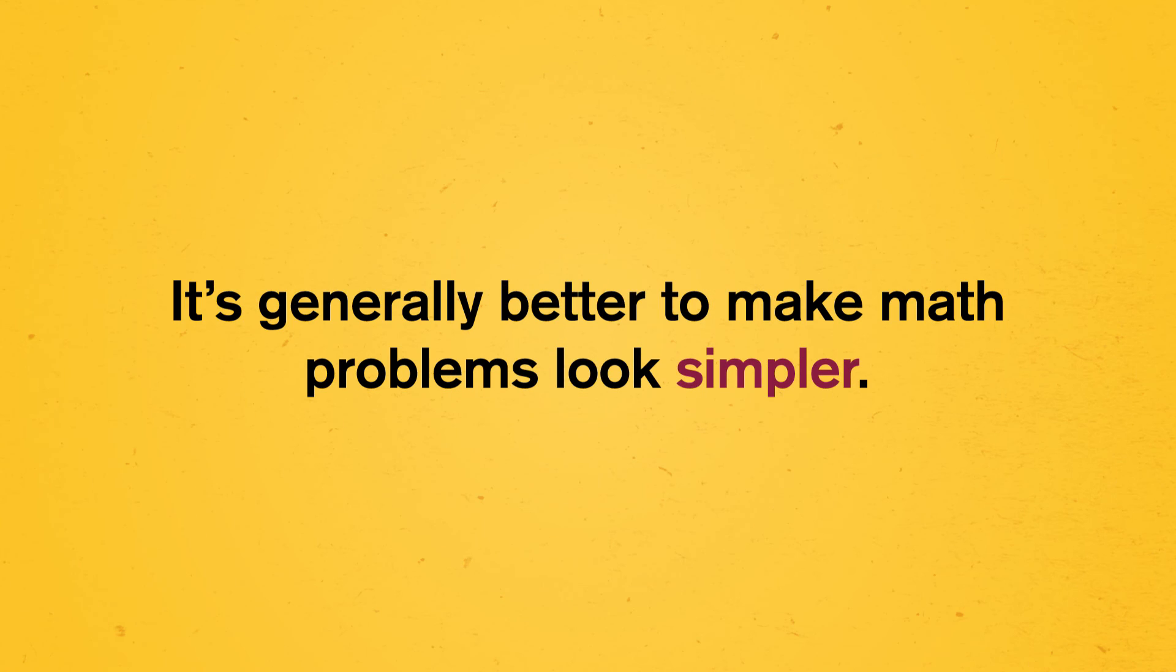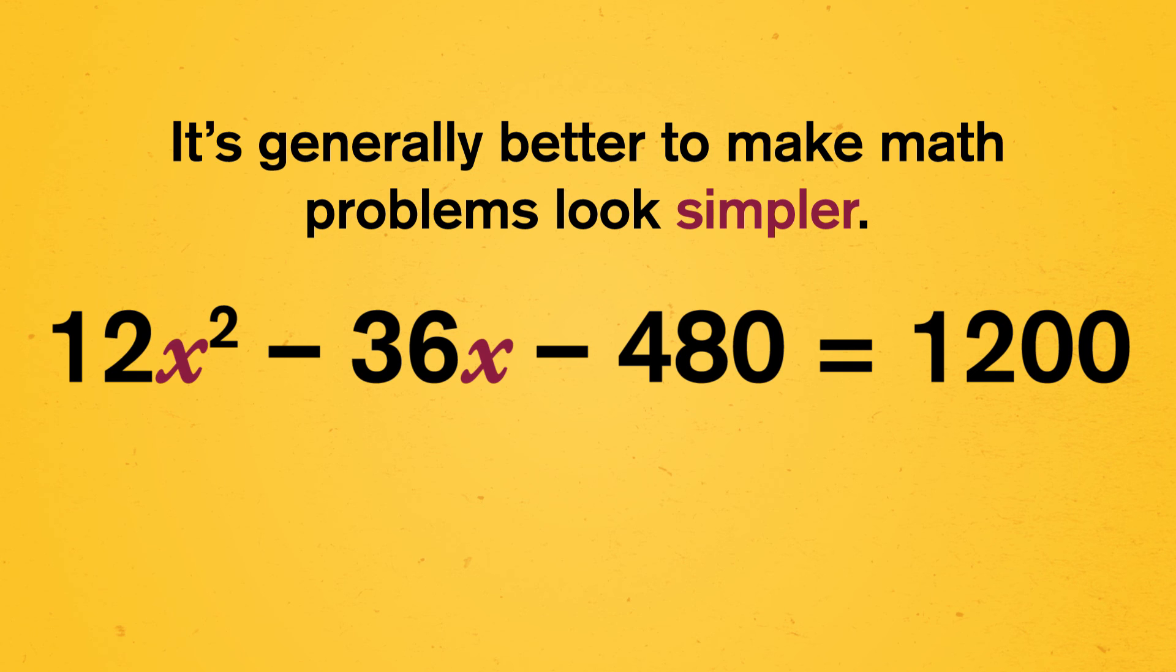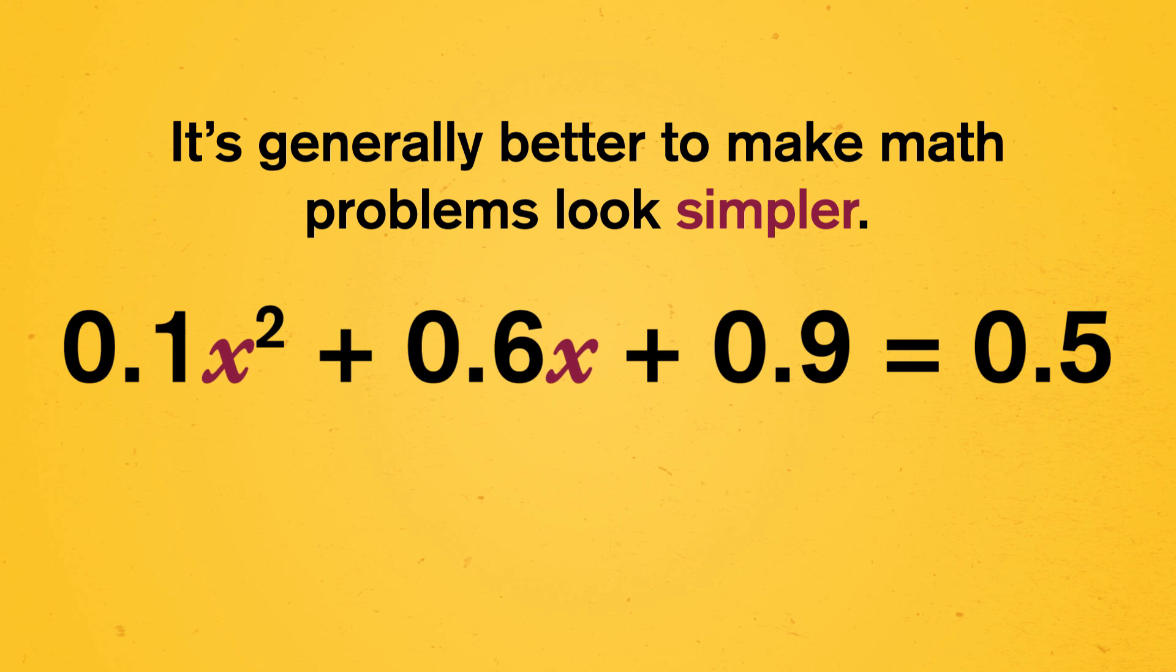That sounds easy, but of course it's not. So when you're faced with an algebra problem and feeling stuck, it's better to do something, anything, than nothing. But what can you do? First, it's generally better to make math problems look simpler. Look for what you can do to both sides that will make the equation less complicated. Often this will be adding or subtracting a number on both sides. Or if there are a lot of largest numbers involved, like in 12x squared minus 36x minus 480 equals 1200, look for something you can divide everything by to make them much smaller. Or if all your numbers are tiny, like 0.1x squared plus 0.6x plus 0.9 equals 0.5, think about how you could scale your equation up to make it easier to work with.